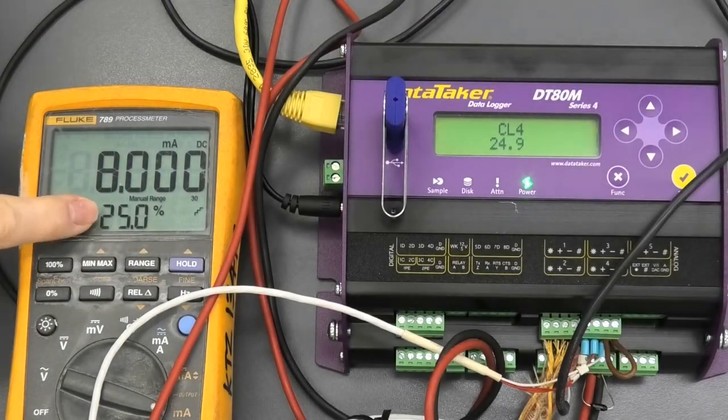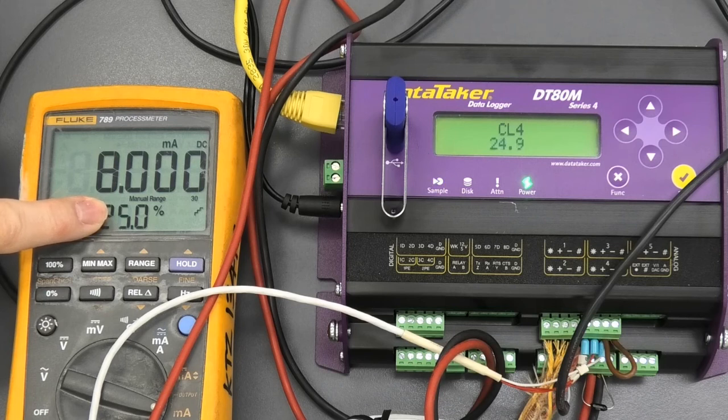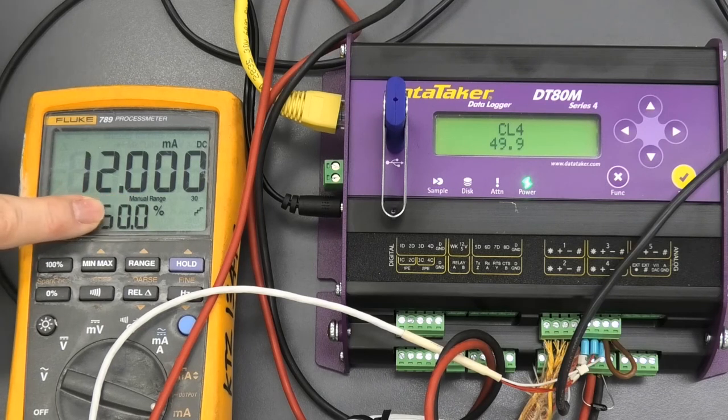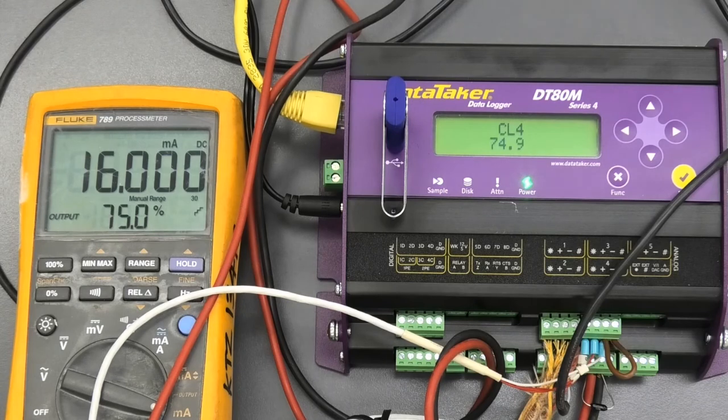And you can see 12, 25, 24.9, it's now at zero, there we are, 24, 25, 24.9, 50%, etc. So that's it, measuring current loop. Thank you very much.